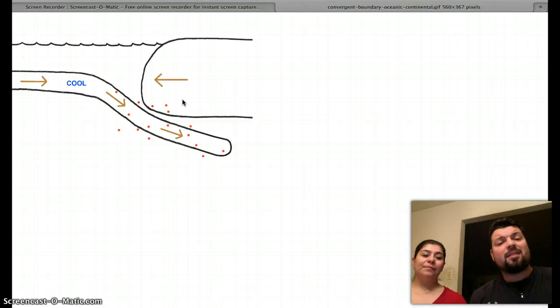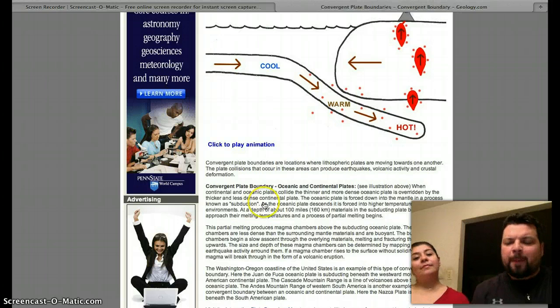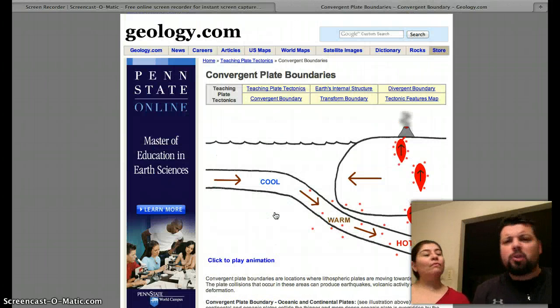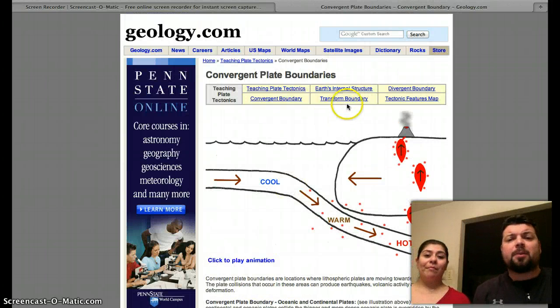So I want you to hit pause. On that same tab of convergent, I want you to draw this boundary with a little volcano. Okay, let's continue.